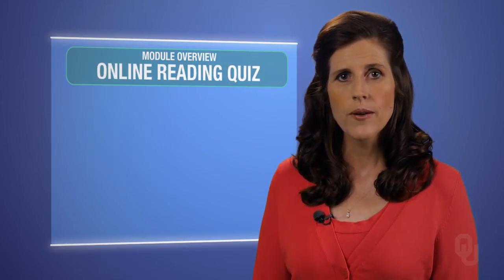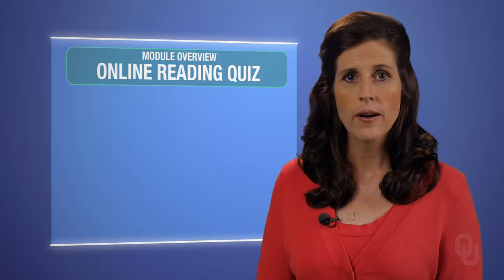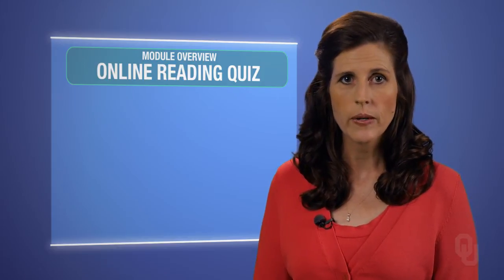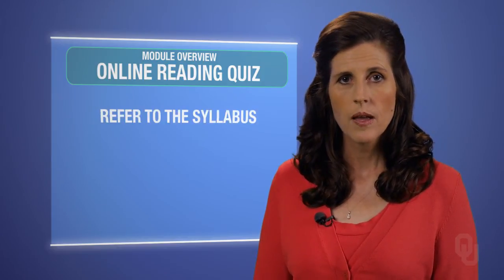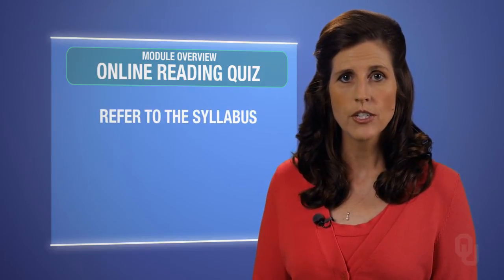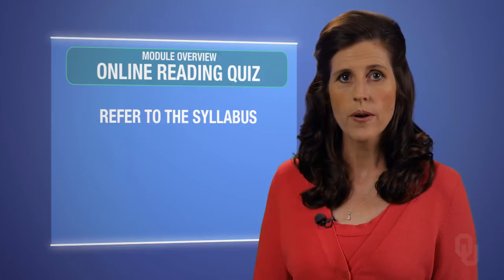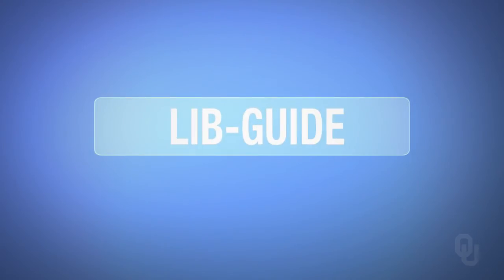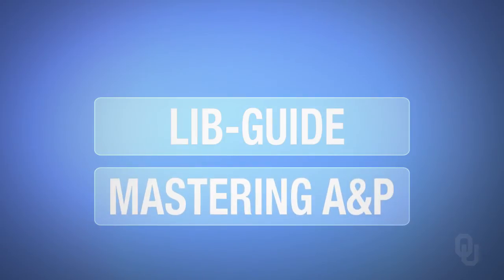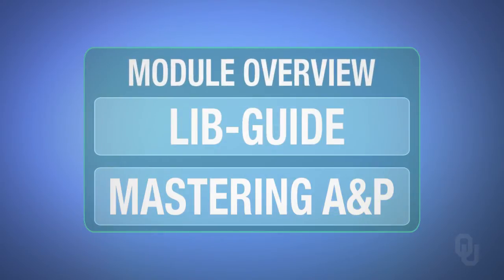The required readings will be followed by a required online reading quiz. Please refer to the syllabus regarding the due dates for online reading quizzes. The link to libguide, which contains additional optional resources that you may find helpful for this course, and the mastering A&P link, can also be found in the module overview.